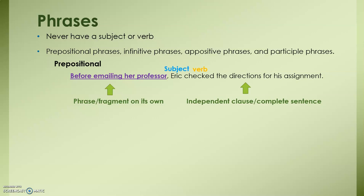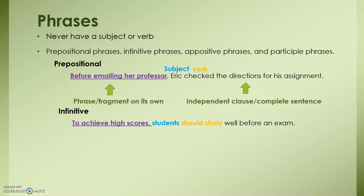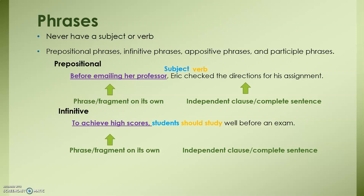Our second example shows the same idea using an infinitive phrase: 'To achieve high scores, [comma] students should study well before an exam.' On the left-hand side, 'to achieve high scores,' we have a phrase that would be a fragment if you just ended the sentence there. On the right-hand side, we have our subject in blue, our verb in orange, and a complete thought that can exist without the part on the left. This is why we can split these two with a comma.